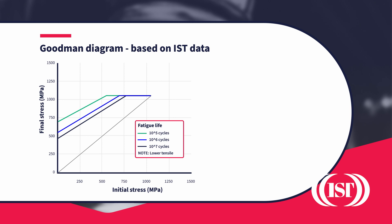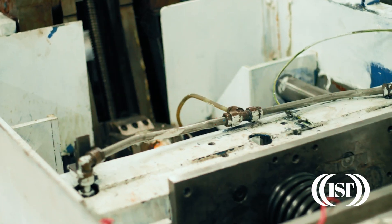The graph cuts off at the maximum safe design stress. The cross shows how the spring is being used, based on the initial and final stress at the two working positions. Where the cross falls defines the life, so in this example we would expect a life of about 1 million cycles.